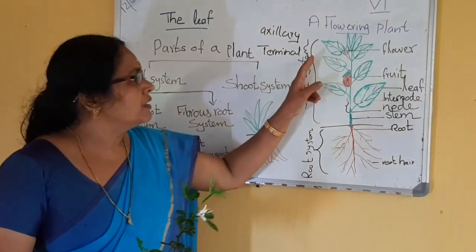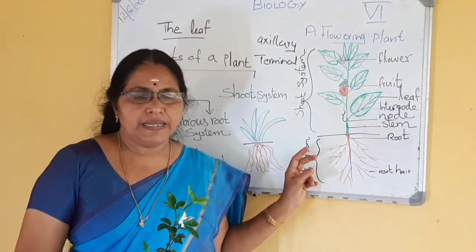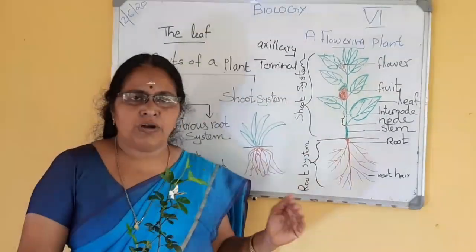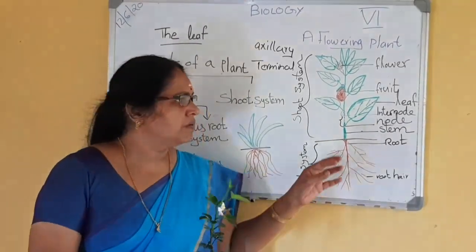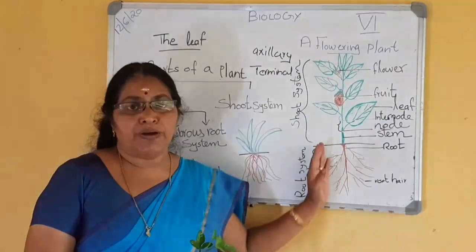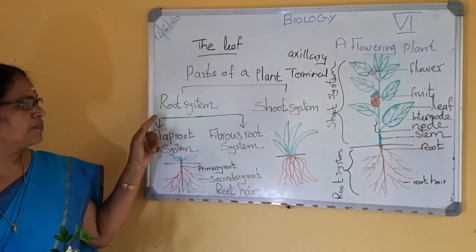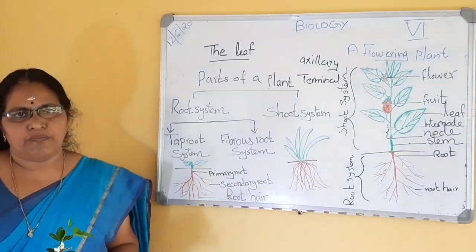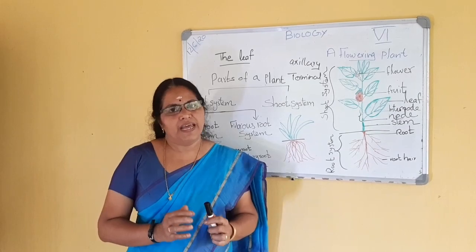Here are the parts of a flowering plant. All students have to draw the structure in the notebook. You have learned it in previous classes, but you have to know the structure of the flowering plant — then only you can study about the leaf and other parts. You also have to draw the two types of root system: tap root system and fibrous root system. That's all for today. You can make it more clear with the help of an animation.